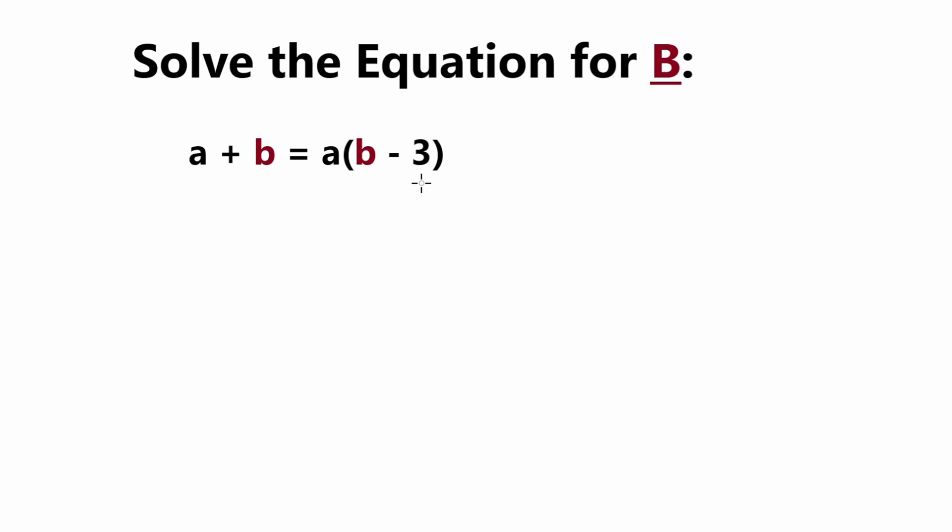So how do we do that? Well let's see. We want b by itself on one side, right? But if you were to notice, taking a glance at it, you would notice that we have two b's here. So what we need to do is we need to put them together.